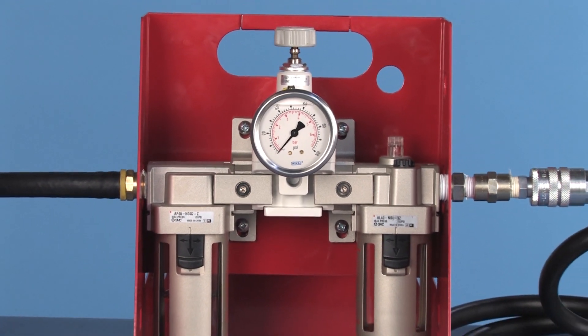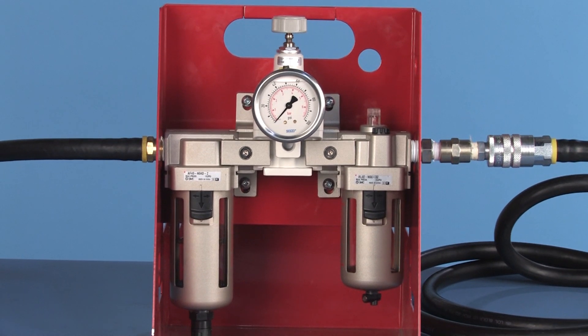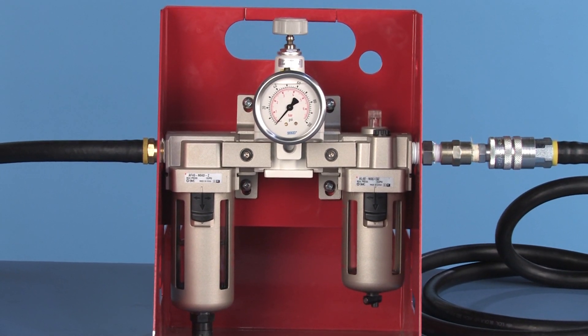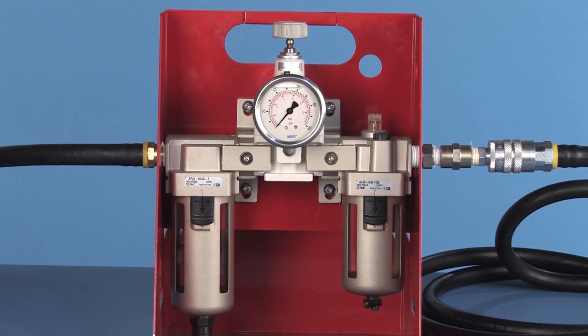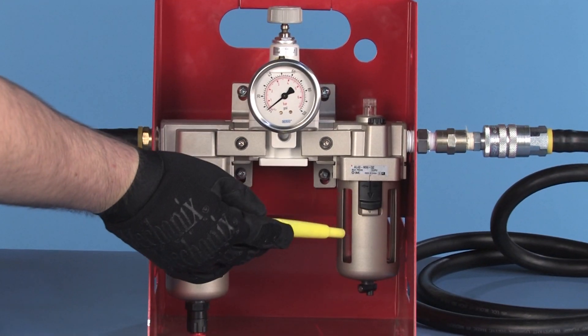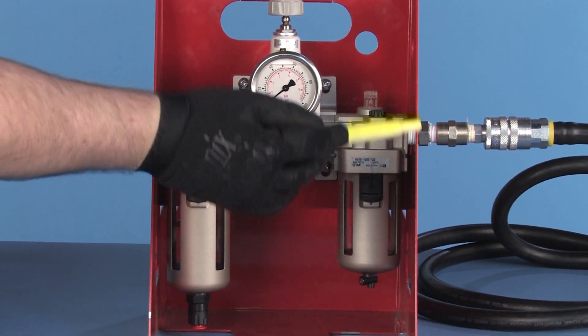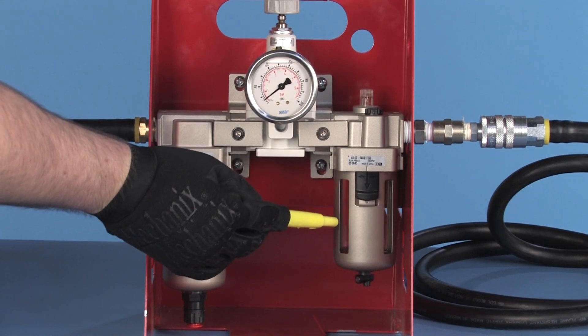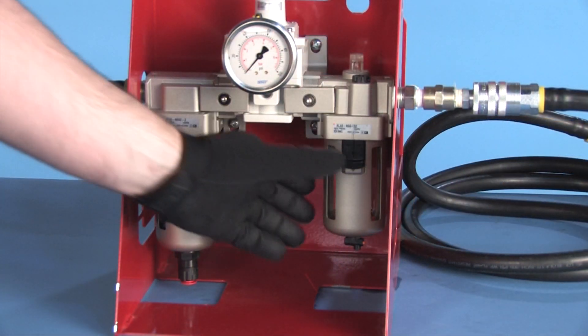The regulator meters input air pressure accurately controlling the torque output of the tool. The lubricator's job is to introduce a fine mist of oil into the air stream to lubricate and protect the internal parts of the tool against corrosion or damage.